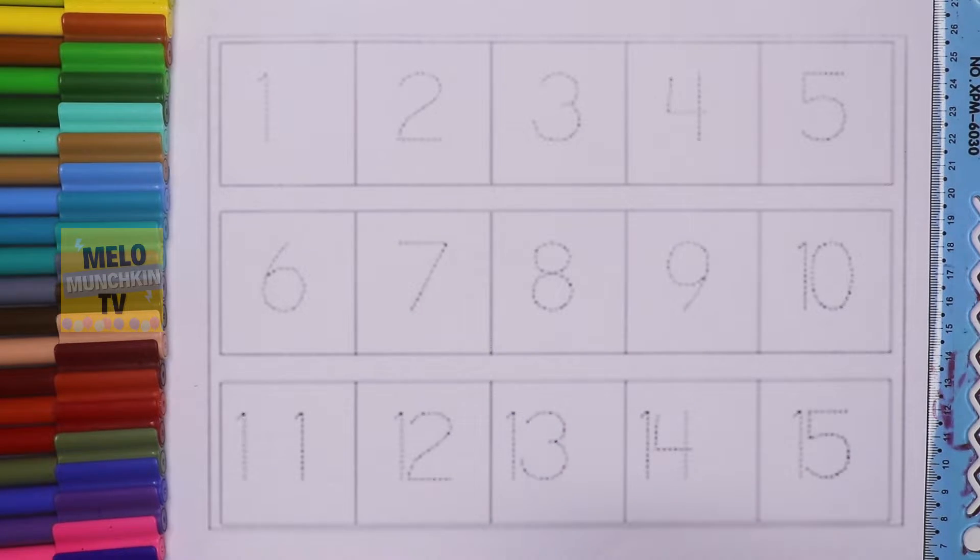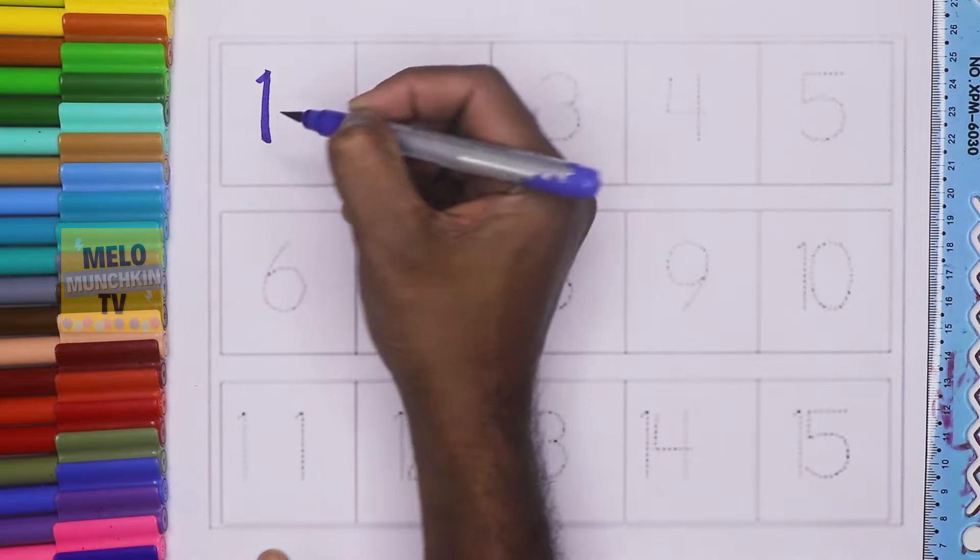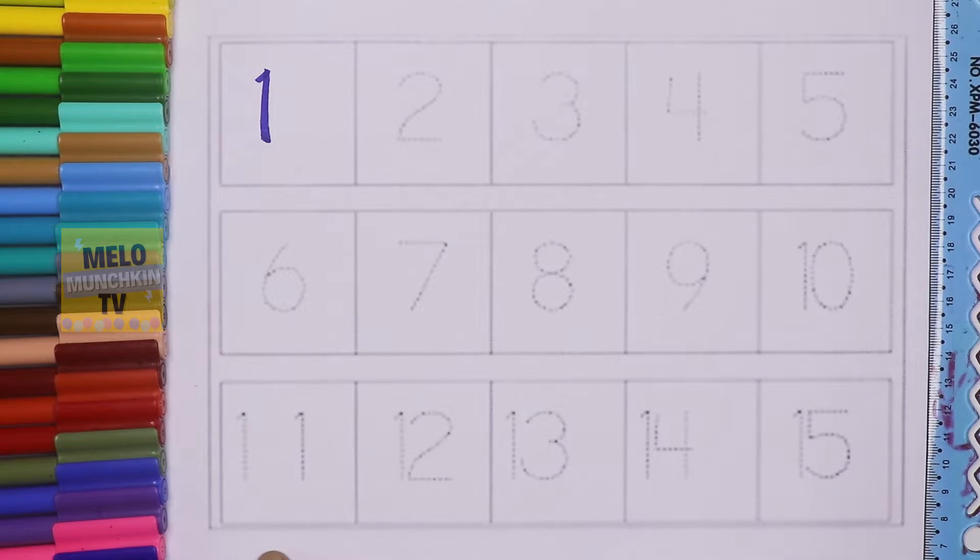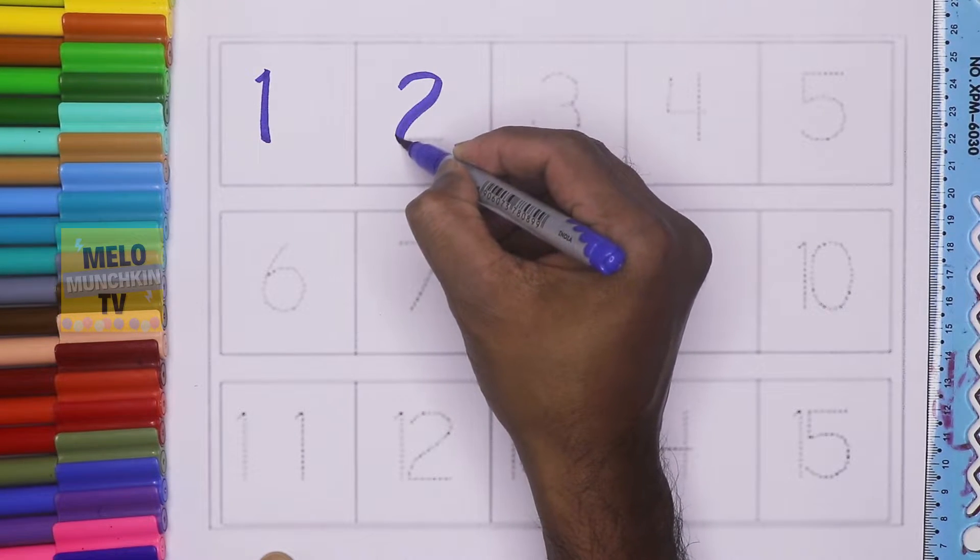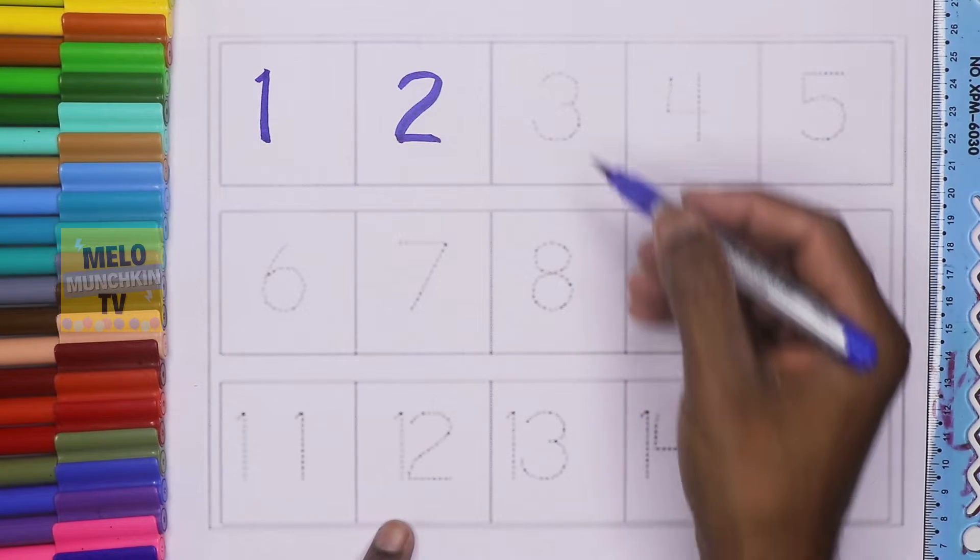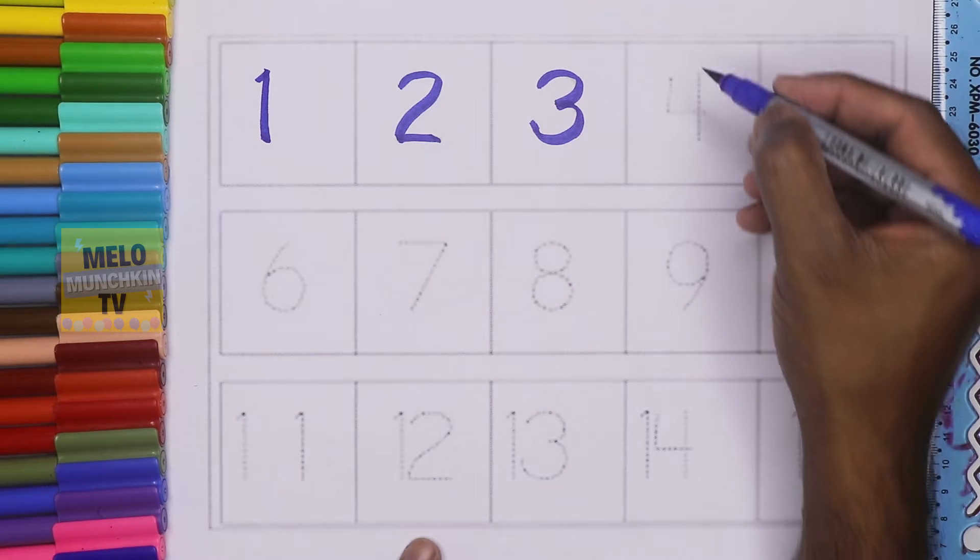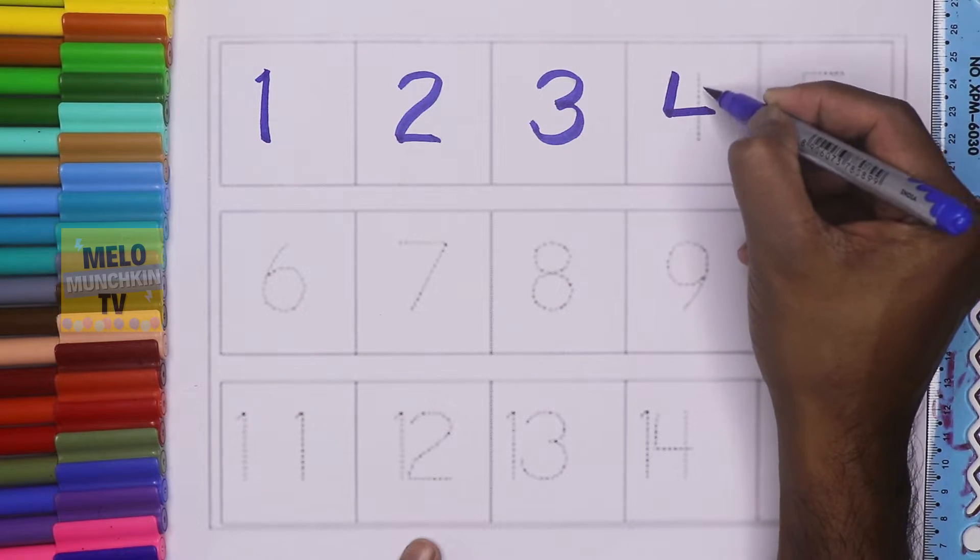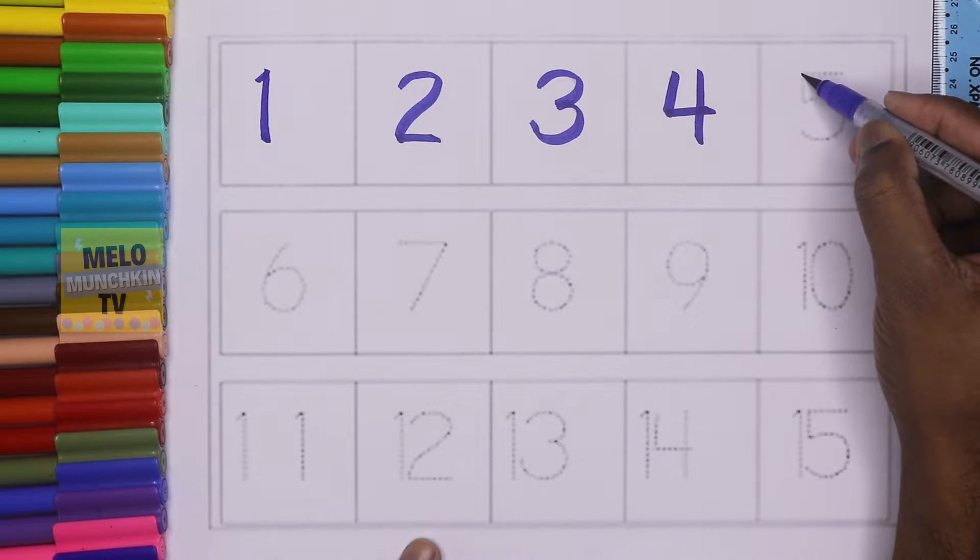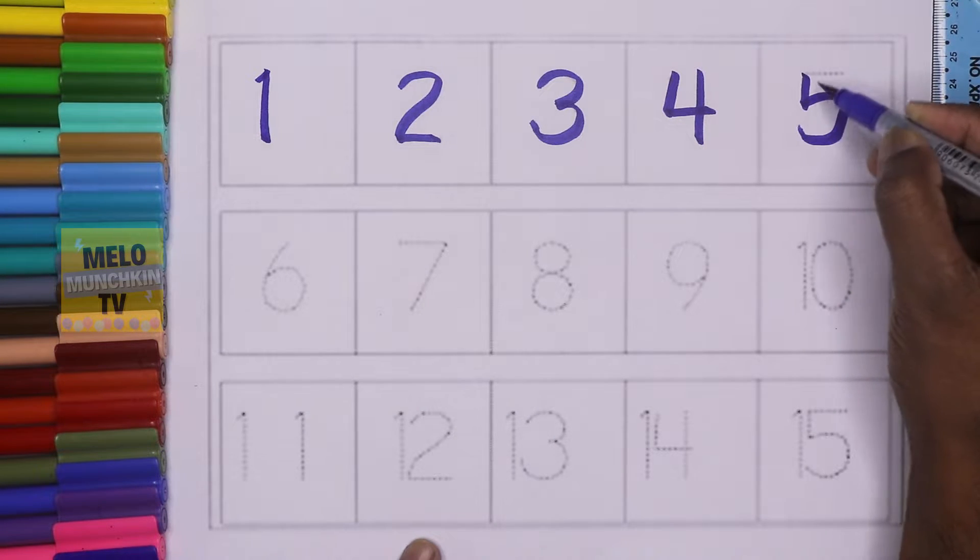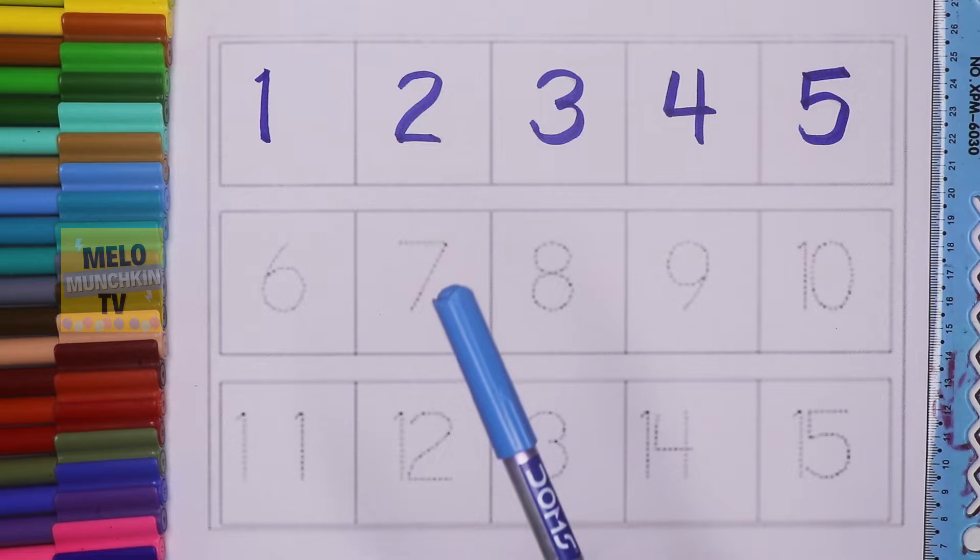Dark blue color. 1, O-N-E, 1. 2, T-W-O, 2. 3, T-H-R-E-E, 3. 4, F-O-U-R, 4. 5, F-I-V-E, 5. Light blue color.